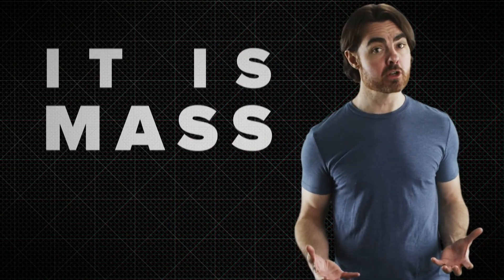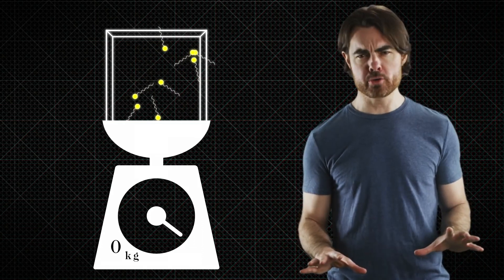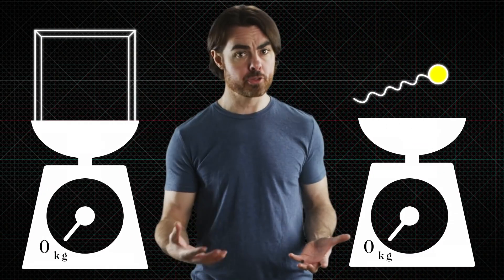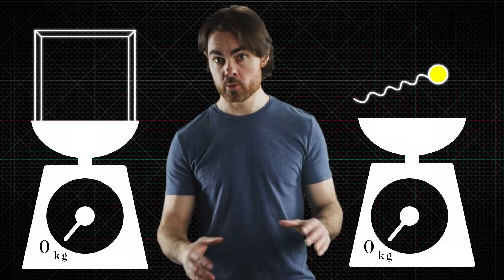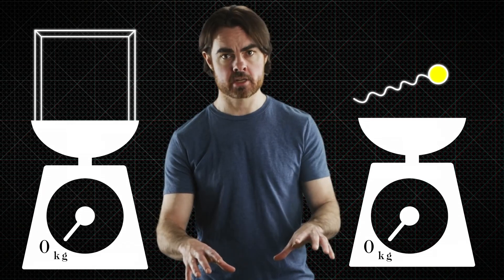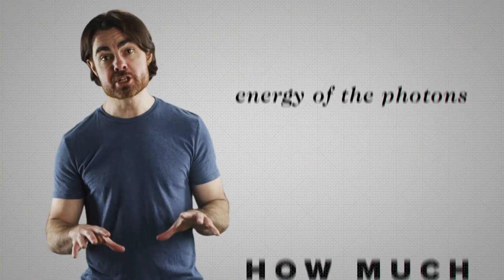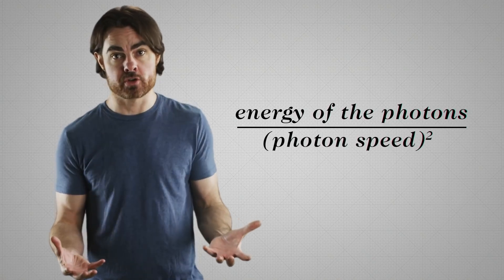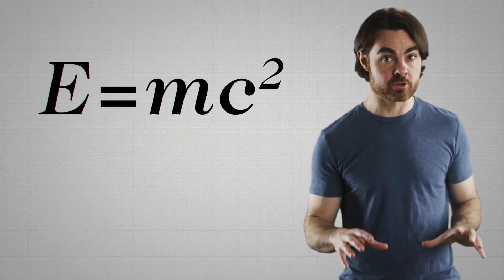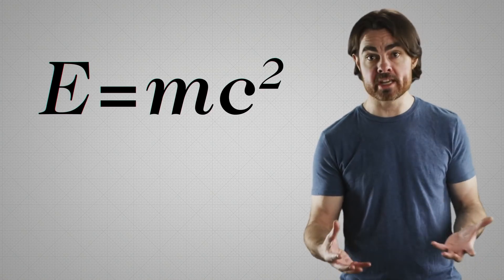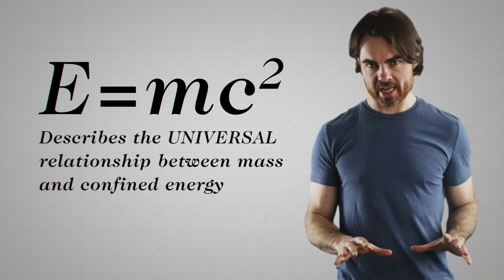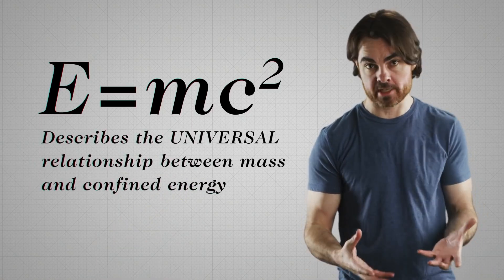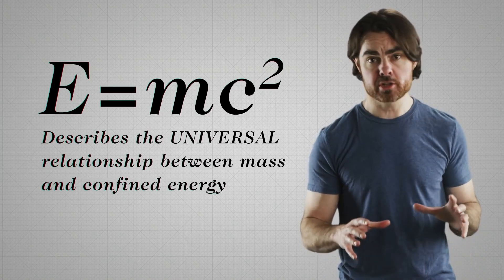Acceleration is resisted in a way that feels exactly like mass. In fact, it's indistinguishable from mass because it is mass. The photon box is massive, even though none of its components, not the photons, not the walls, have any mass. Somehow, mass arises in the ensemble where it doesn't exist in the parts. How much mass does the box have? It's the energy of the photons divided by the square of the speed of those photons. And you can derive the famous E equals mc squared just by looking at how momentum transfers between the photons and the box under acceleration. But E equals mc squared describes the universal relationship between mass and confined energy, not just confined photons.